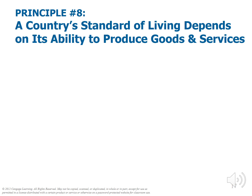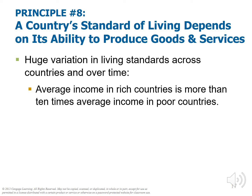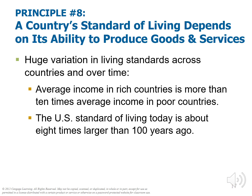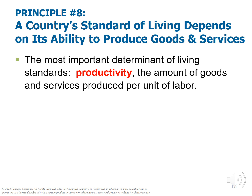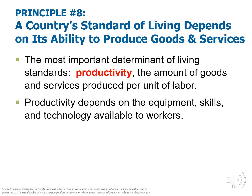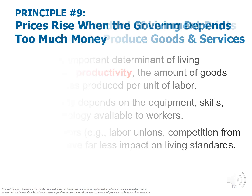Principle number eight: a country's standard of living depends on its ability to produce goods and services. There is a huge variation in living standards across countries and over time. Average income in rich countries is more than ten times average income in poor countries. The U.S. standard of living today is much higher than it used to be — in fact, it's eight times larger than what it was only a hundred years ago. The most important determinant of living standards is productivity, which is the amount of goods and services produced per unit of labor. Productivity depends upon tools, skills, and technology available to workers.